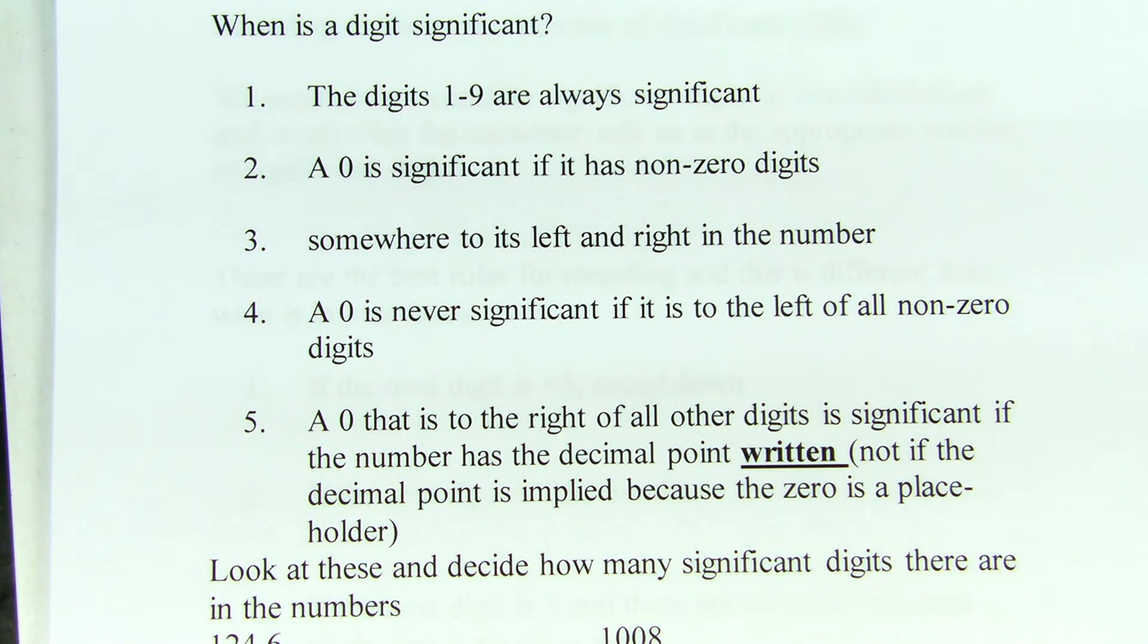So, the first four are pretty straightforward. If we have the digit one through nine and we write it down on the paper, it is always significant.